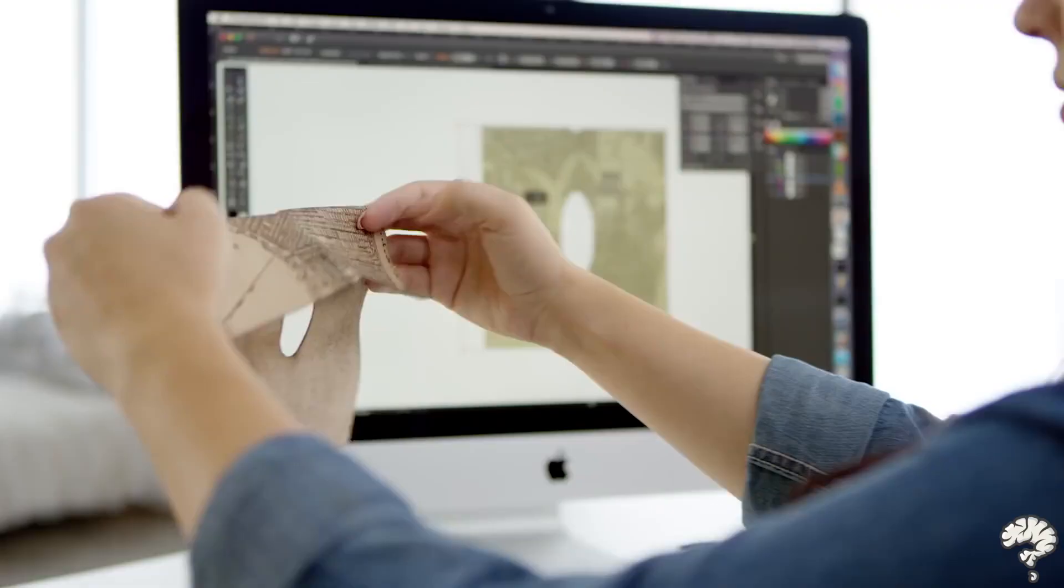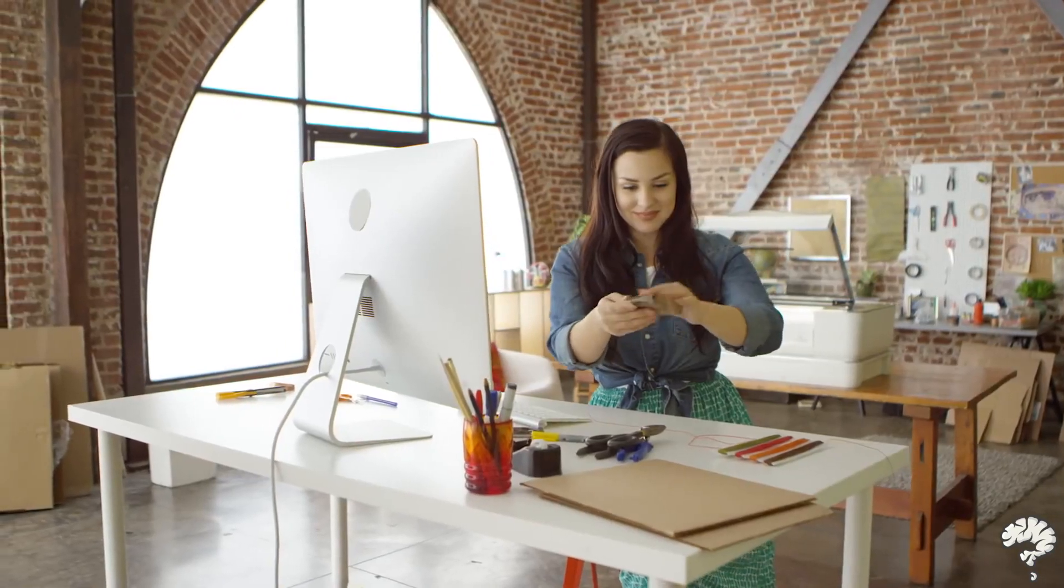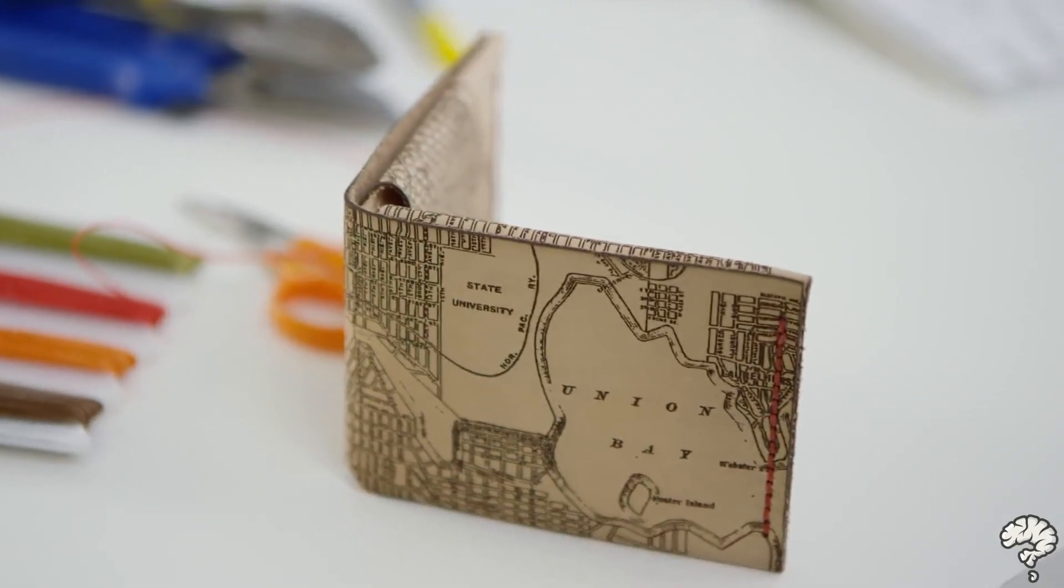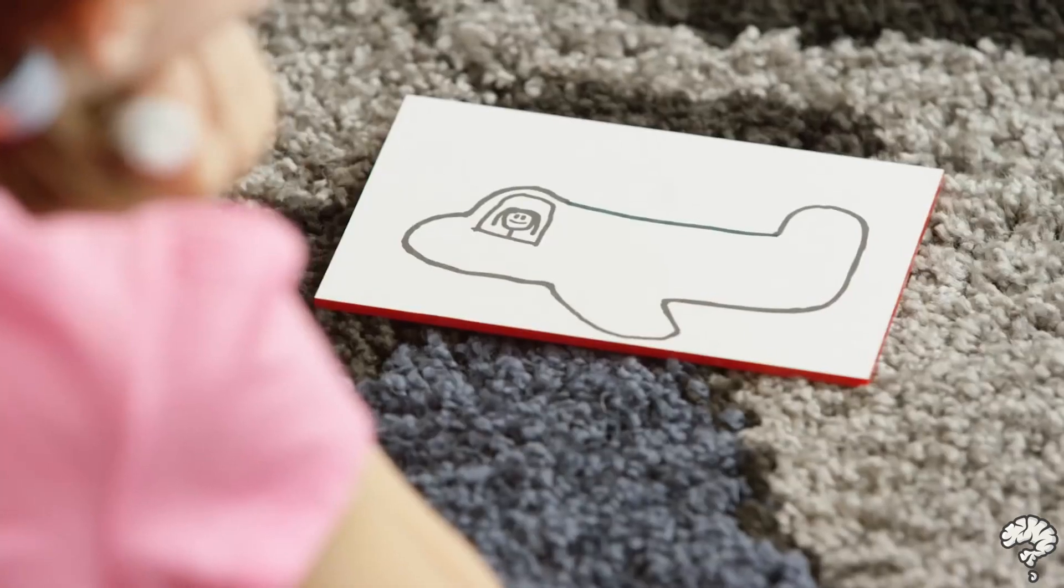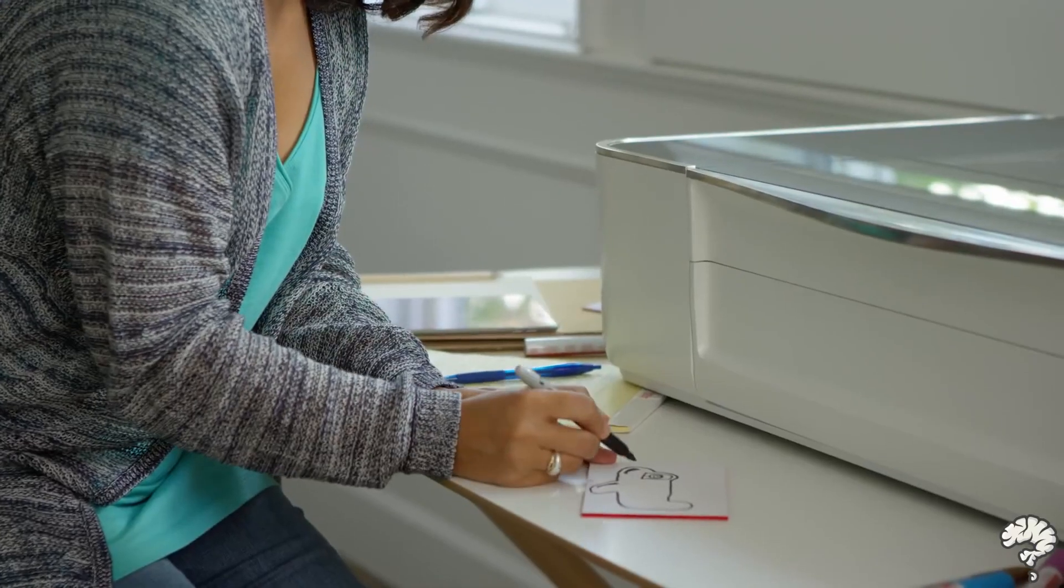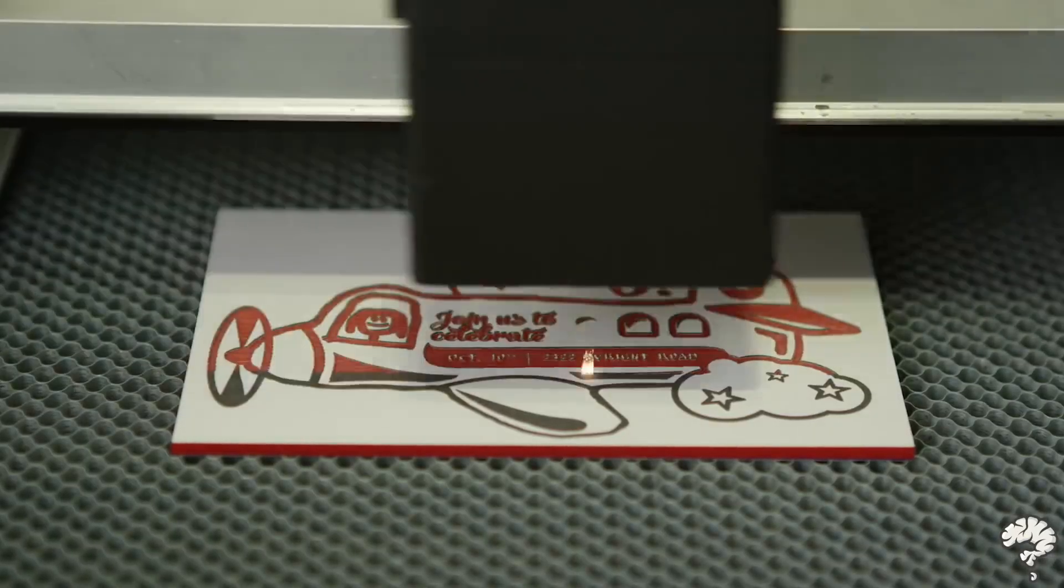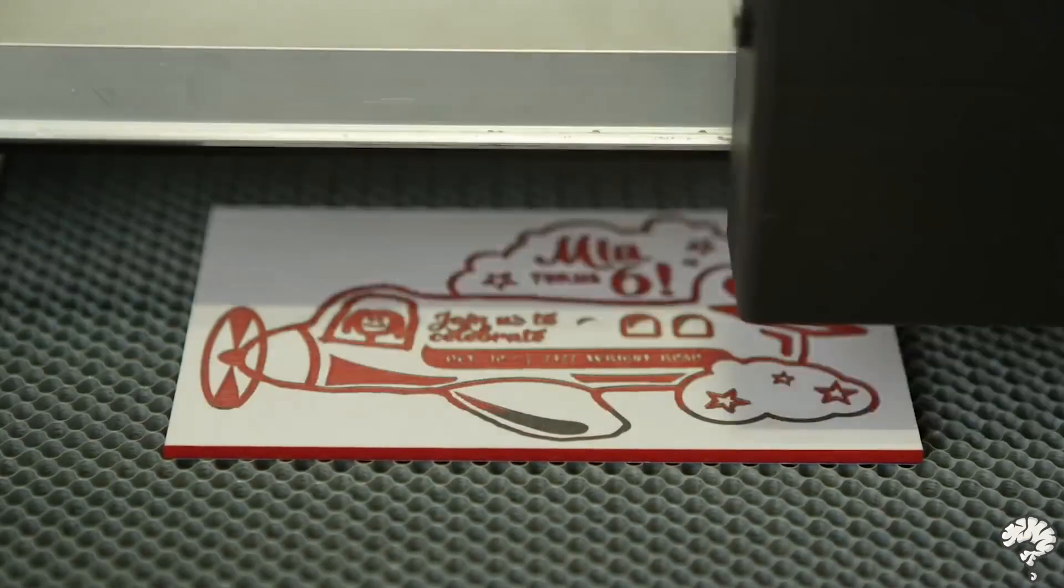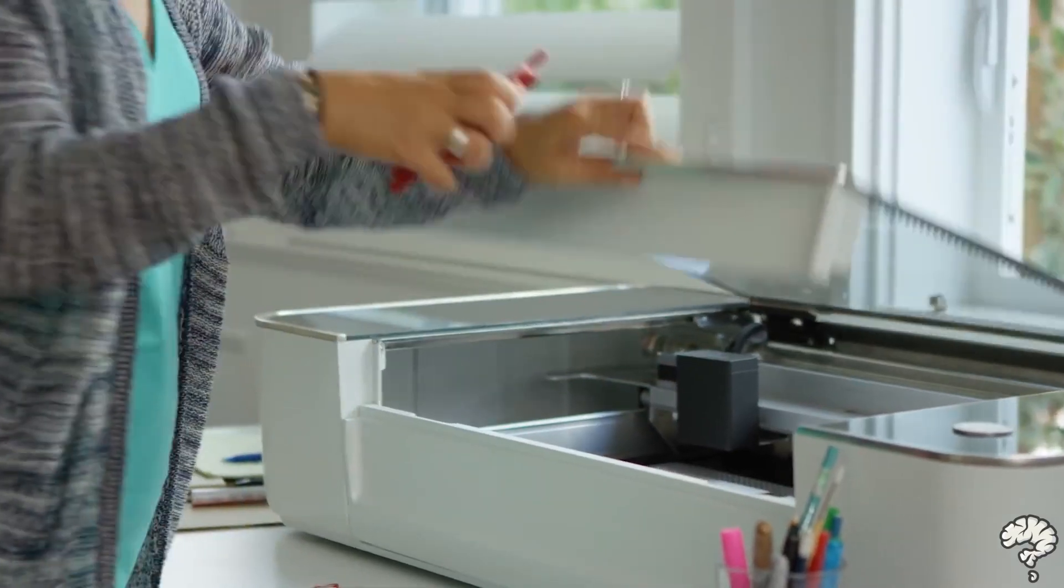Glowforge cuts holes with such precision that you can lace up leather like a shoe. If you draw on material with an ordinary pen, dual cameras create a 3D image of your material and your drawing. Glowforge will engrave and cut directly over the ink. Then, it's as easy to make a dozen copies as it is to make just one.